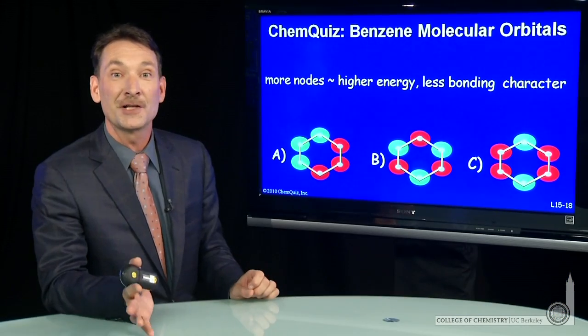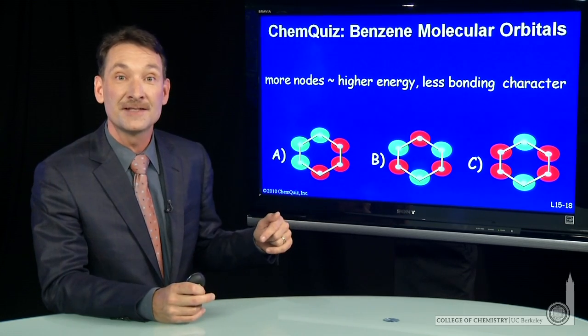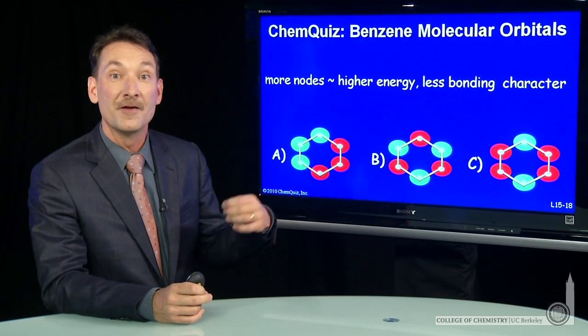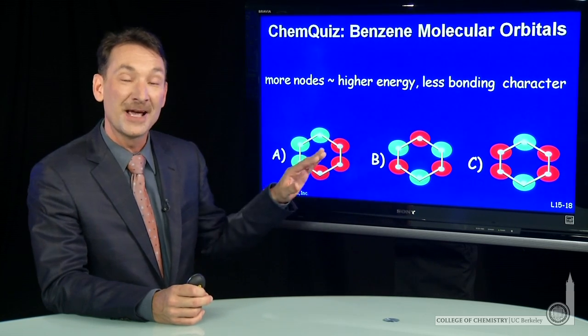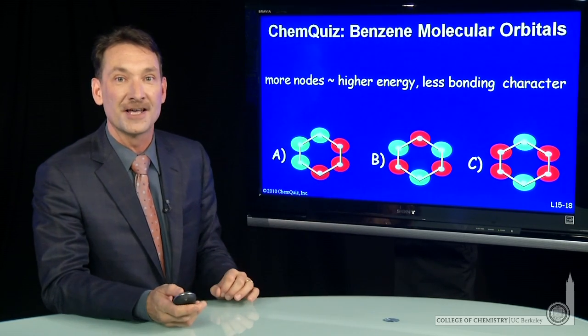We're talking about the molecular orbitals in benzene. Now, benzene is one of these conjugated alternating double bond systems where each carbon is sp2 hybridized, so it has an available p orbital to form extended molecular orbitals. The question is, which combination is the highest energy?